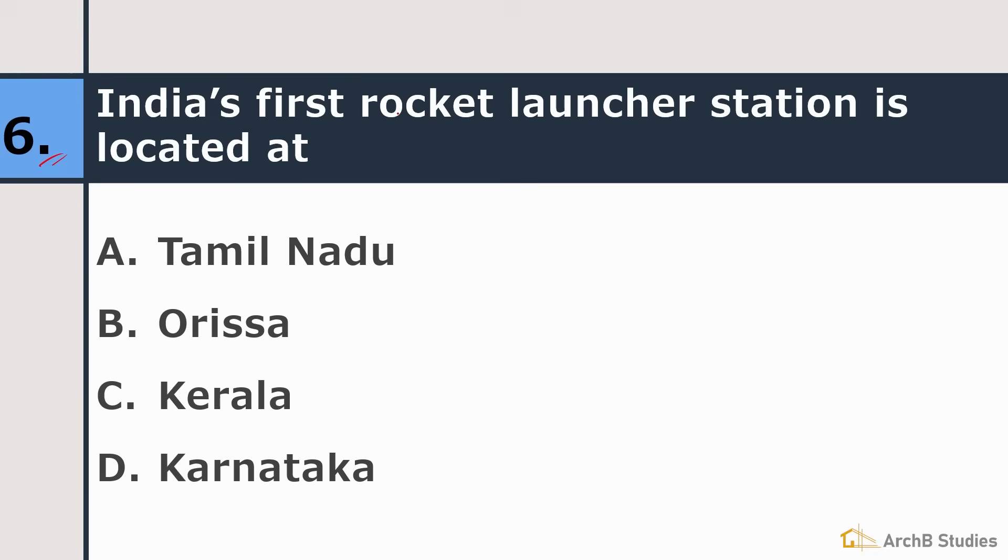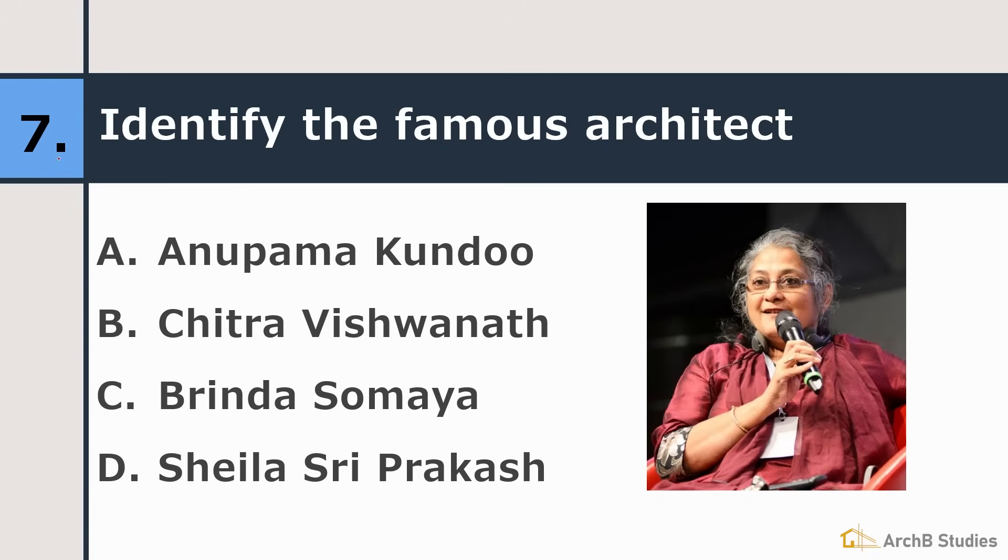Sixth is India's first rocket launcher station is located at Tamil Nadu, Odisha, Kerala or Karnataka. Right answer is Kerala. It is located at Trivandrum. Seventh is identify the famous architect. Anupama Kundu, Chitra Viswanath, Brinda Somaya or Sreela Sreeprakash. Right answer is Sreela Sreeprakash.